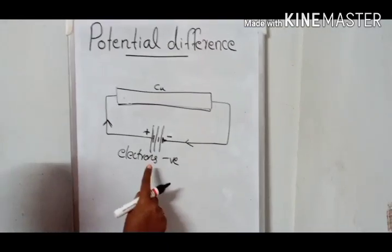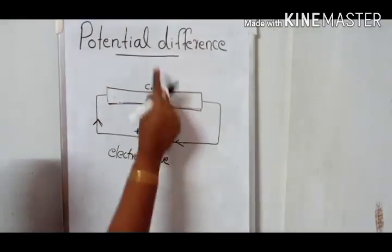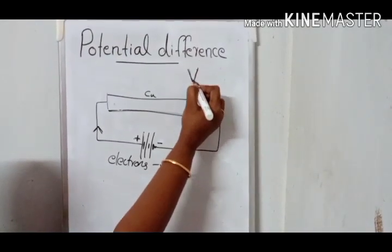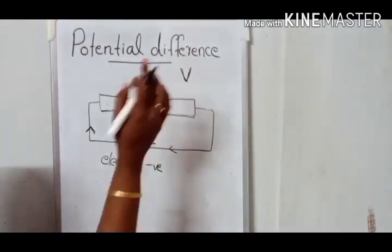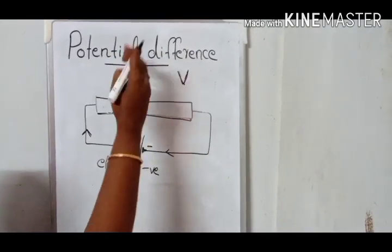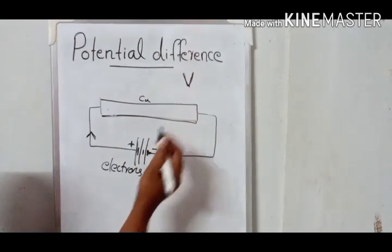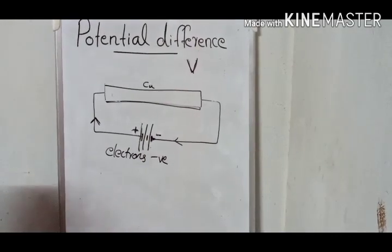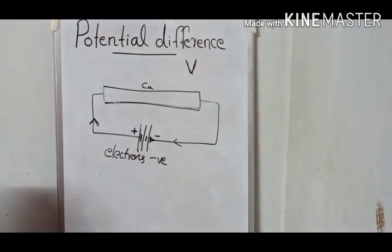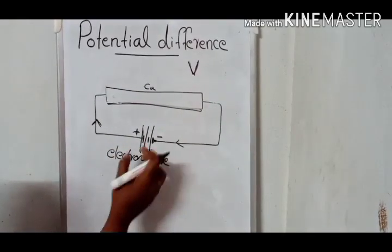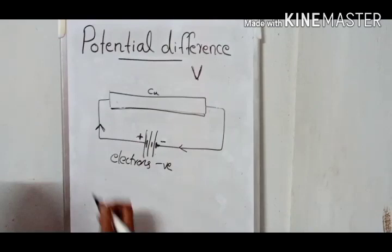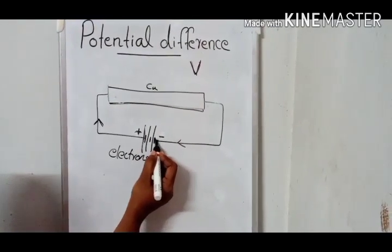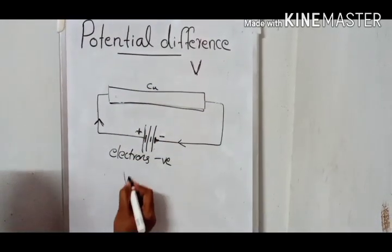Potential difference is created by using a battery. This potential difference is denoted by the symbol V. V is used to denote potential difference. We usually call this as voltage, but scientifically it is named as potential difference. The symbol is V. So this battery is giving the potential difference. That means this battery is doing some work — it is moving the charge from one end of the conductor to the other end. So it is doing some work.